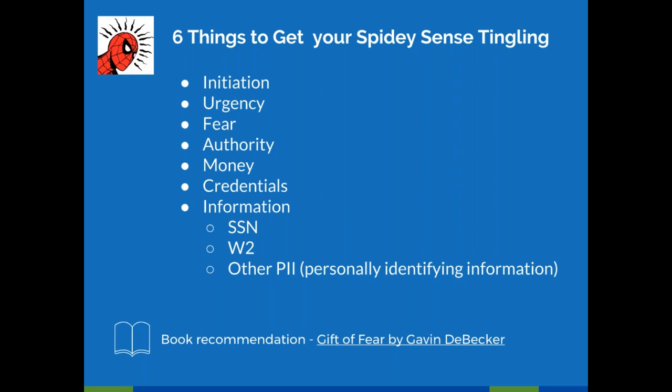How social engineering works: someone gets in touch with you and gets you to do something. Be on the lookout for these characteristics as they accumulate, and become more suspicious. First: initiation — you don't initiate this, it comes to you. You get an email, a phone call, someone walks into your office. You didn't walk into the Verizon store; a Verizon representative shows up at your office. Second: urgency — this needs to be resolved right now.